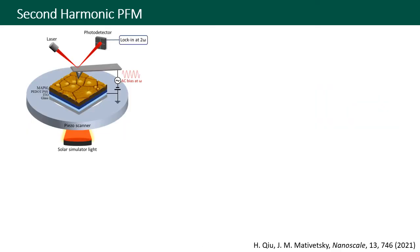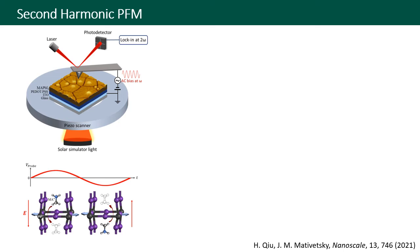I'll talk a bit more about the evidence for ionic motion since this measurement approach is rather new. During second harmonic PFM measurements, we applied an AC bias to the probe while it is in contact with the sample, and then recorded the second harmonic oscillation of the probe due to surface displacements of the sample. We propose that when an AC bias is applied, lattice distortion during methylammonium ion migration leads to surface displacements at twice the applied bias frequency.